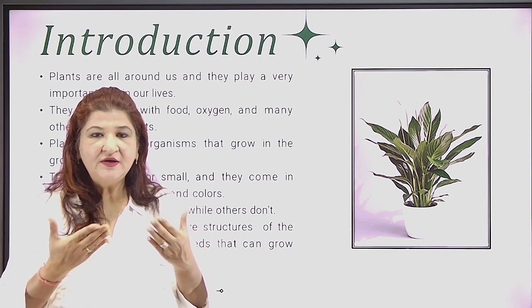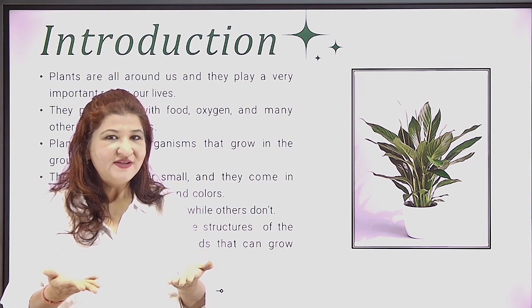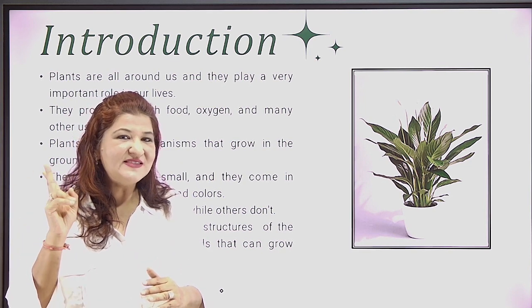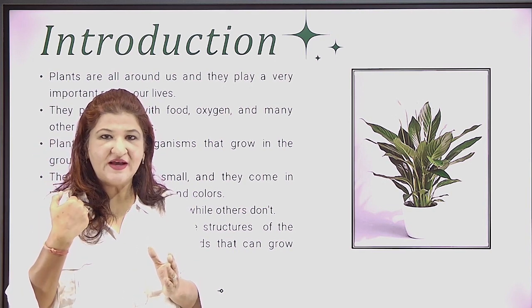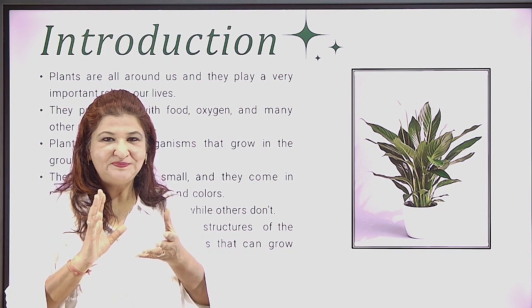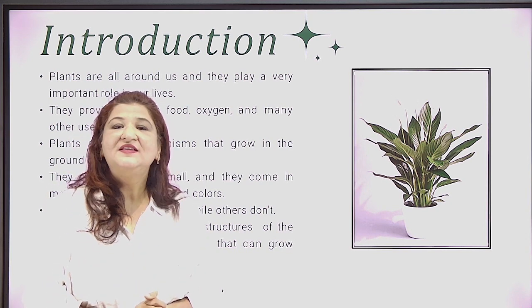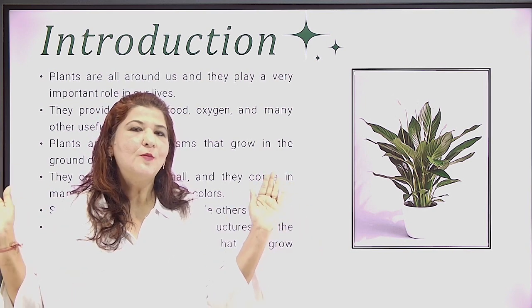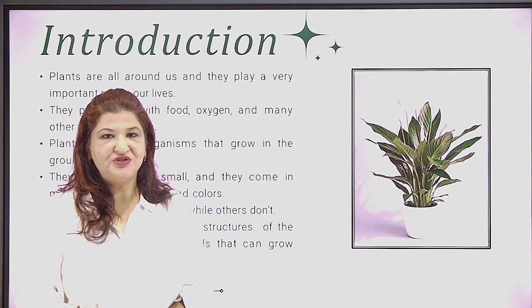When we are breathing, human beings take in oxygen and we give out carbon dioxide. But what do plants do? Plants balance the cycle. They take in carbon dioxide and give out oxygen, balancing the air for us. And that is why it is very necessary that we all grow more and more plants. So let's learn more about the classification of plants.